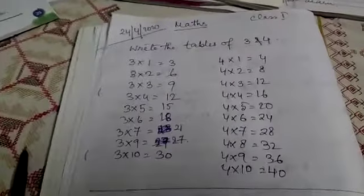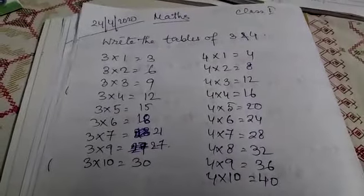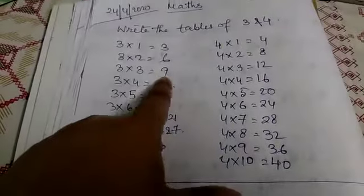Good morning students, this is Class 1 Maths. Today is 24/4/2020, and we're learning the tables of 3 and 4. 3×1=3, 3×2=6, 3×3=9, 3×4=12.